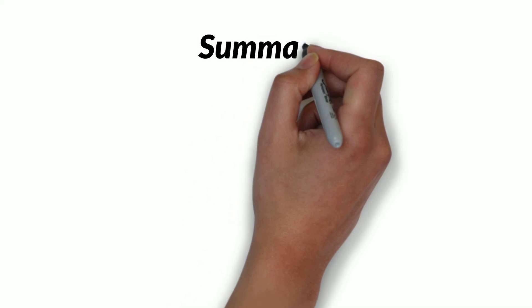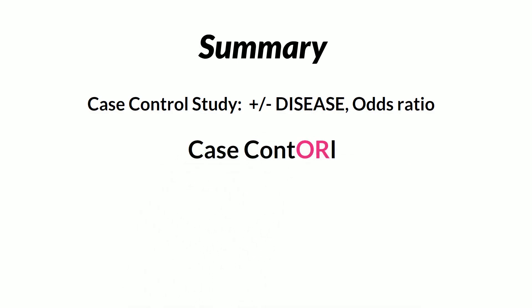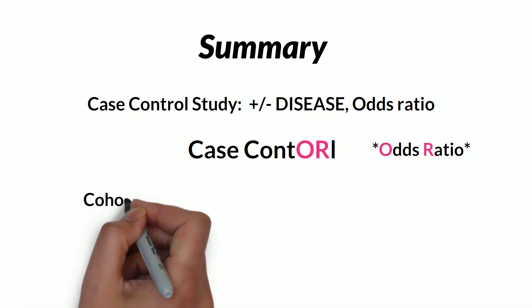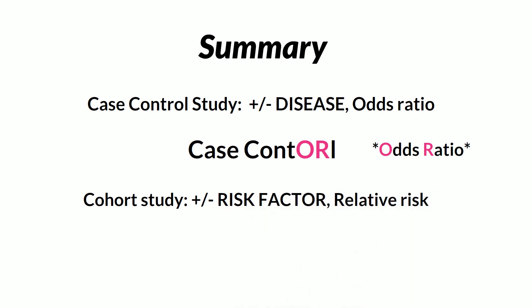To sum up: in a case control study, you are dealing with people with the disease and without the disease, and you assess the odds ratio. You can remember this by swapping the letters O and R in the word 'control' — so OR stands for odds ratio. In a cohort study, you are dealing with people exposed to the risk factor or not, and you assess the relative risk. You can remember it by writing the word 'cohort' with double R — relative risk.